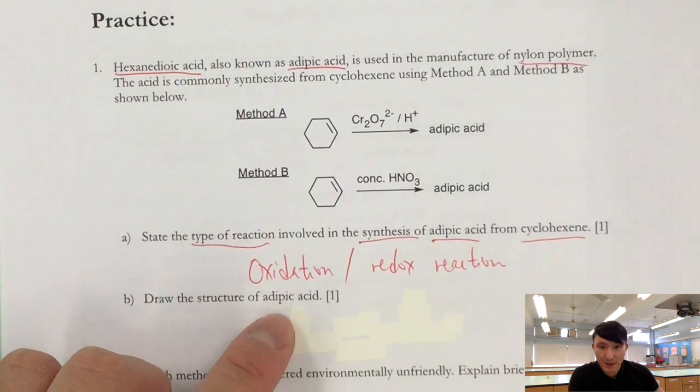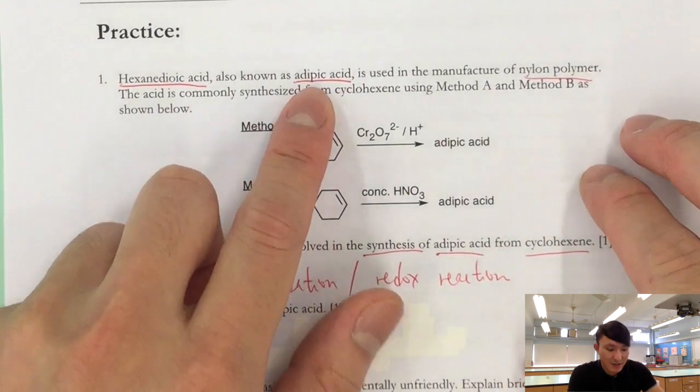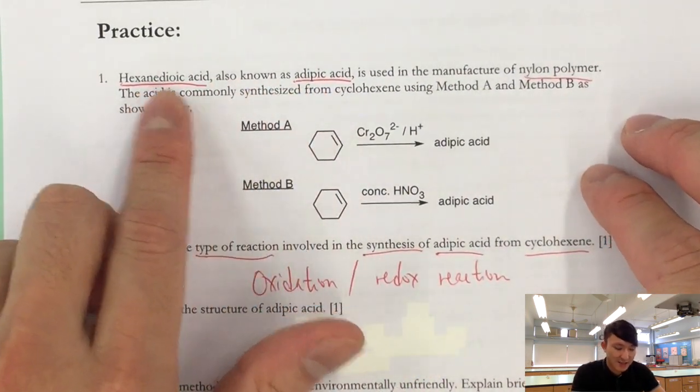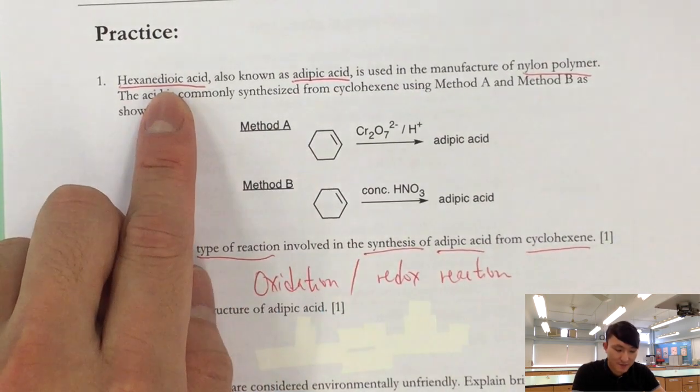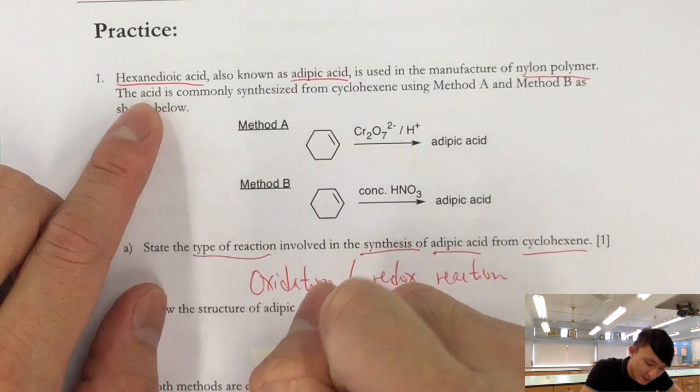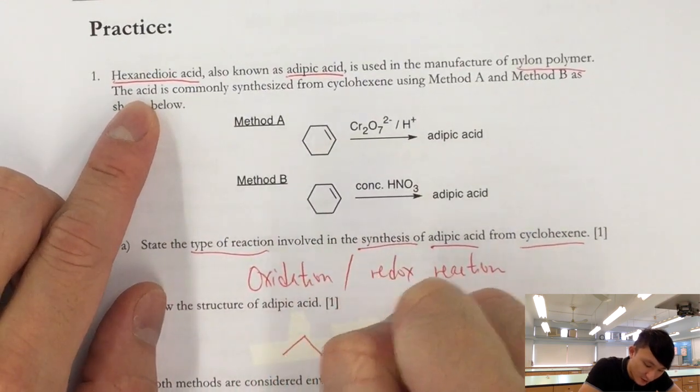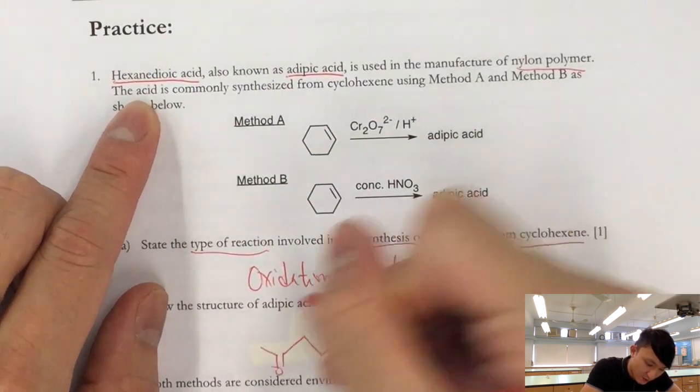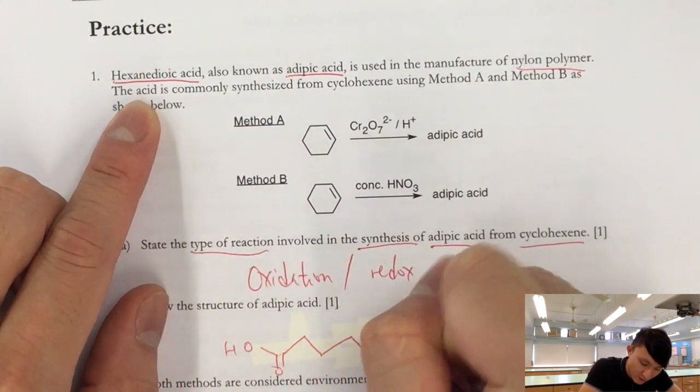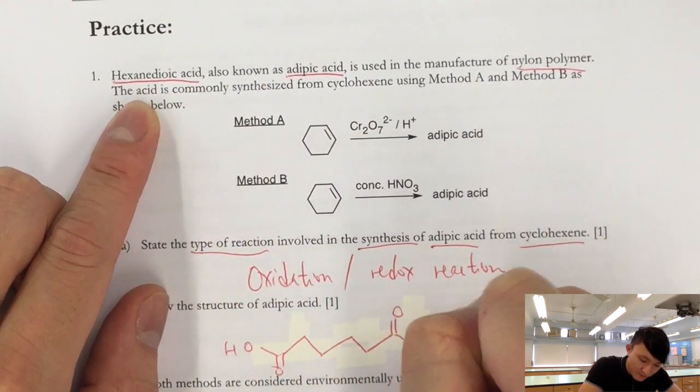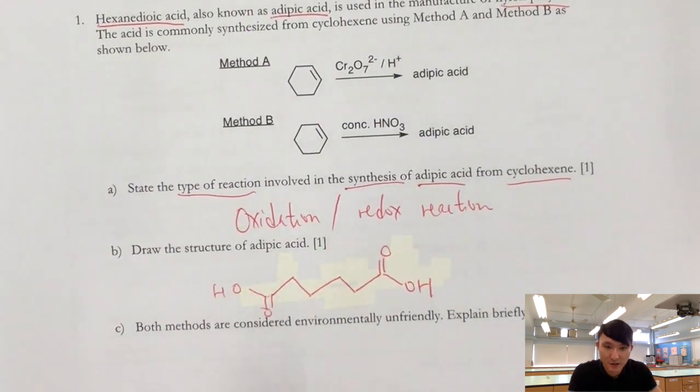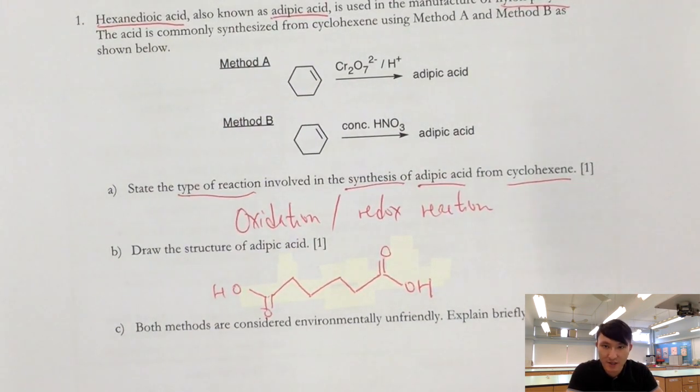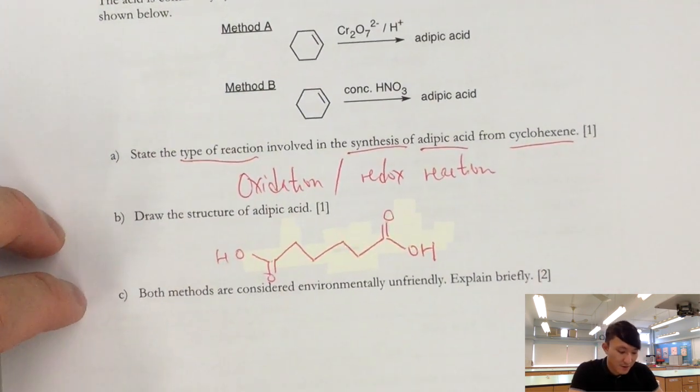Now for part B, draw the structure of adipic acid. Now, adipic acid is also known as hexanedioic acid. So you are drawing the structure of hexanedioic acid. So basically, it is like this. It's a 6-carbon straight chain with carboxyl groups at the two ends of the chain.